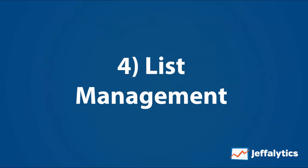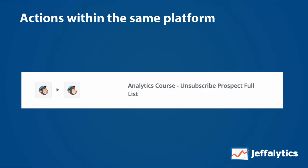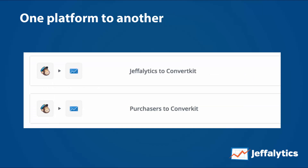Number four: list management. You can add webinar registrants to your email list easily, making sure they have the right tags and criteria for future automations. You can also take actions within the same platform — if they do one action in MailChimp you can unsubscribe them from another. Systems like Drip automatically do this for you with built-in automations. Always use the native integration if possible, but you can also move subscribers from one platform to another using Zapier when needed.